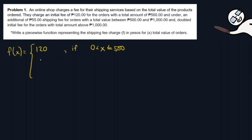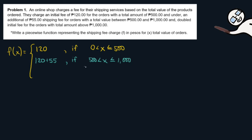The second formula is an additional 55 pesos shipping fee for orders with a total value between 500 and 1000, so x is greater than 500 but less than or equal to 1000 pesos. Lastly, the doubled initial fee applies for orders with a total amount above 1000 pesos. We need to double 120 pesos if the total value of orders is above 1000, so we put x is greater than 1000 pesos.